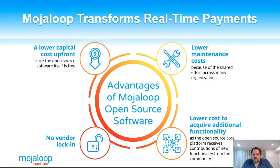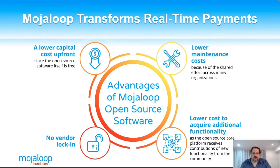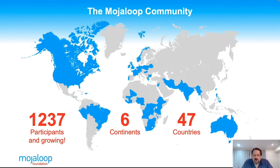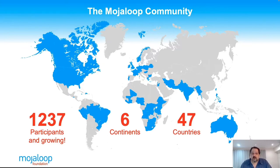Mojo Loop transformed real-time payments with lower upfront cost of capital, lower maintenance costs because effort is shared across organizations, no vendor lock-in, and lower cost to acquire with additional functionality. These are the same principles we're following with the open source anti-fraud software. The Mojo Loop community has grown to about 1,200 participants across six continents and 47 countries. We hope to ride on their coattails a bit, but we are a completely independent project — we don't want to be seen as a Mojo Loop project.